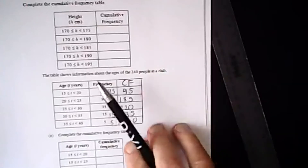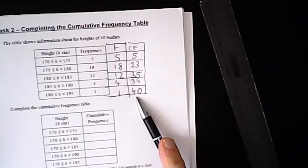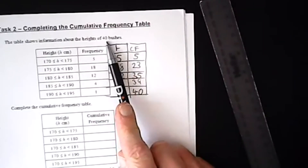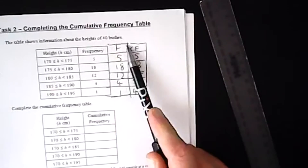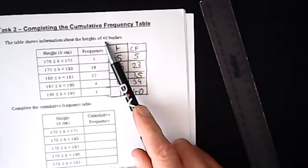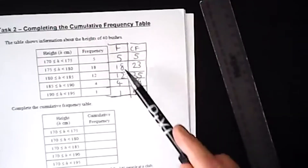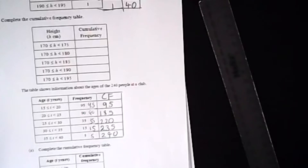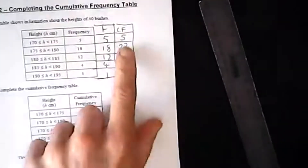This last number is also the total number of people or items in the survey. This question is about heights of bushes, so there are 40 bushes — and this final cumulative frequency matches the total of 40. Very often in GCSE they give you the total number at the start anyway, so you can check those two values. The main thing to learn today: work out the cumulative frequencies by doing a running total — two marks sorted.